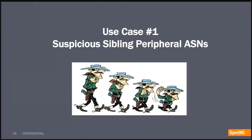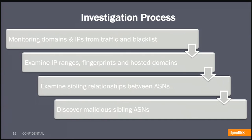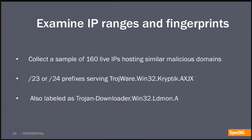The first use case is suspicious sibling peripheral ASNs. Our investigative process starts with domains or IPs as the seed. You examine these IP ranges, explore the fingerprints of the hosts, and see how the servers are being set up. Then you apply the SPN model — examining siblings on the outskirts of the Internet — and discover related suspicious ones. We monitored suspicious domains for a period of time and collected a sample of 160 IPs hosting the same suspicious payload. We saw entire /23s and /24s serving the same type of payload — all IPs on a given /24 serving the exact same payload, labeled as such by AV vendors.